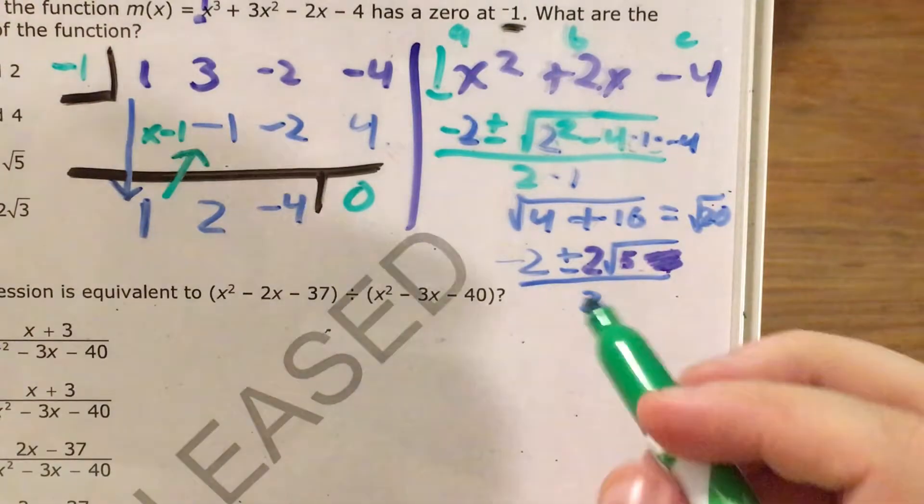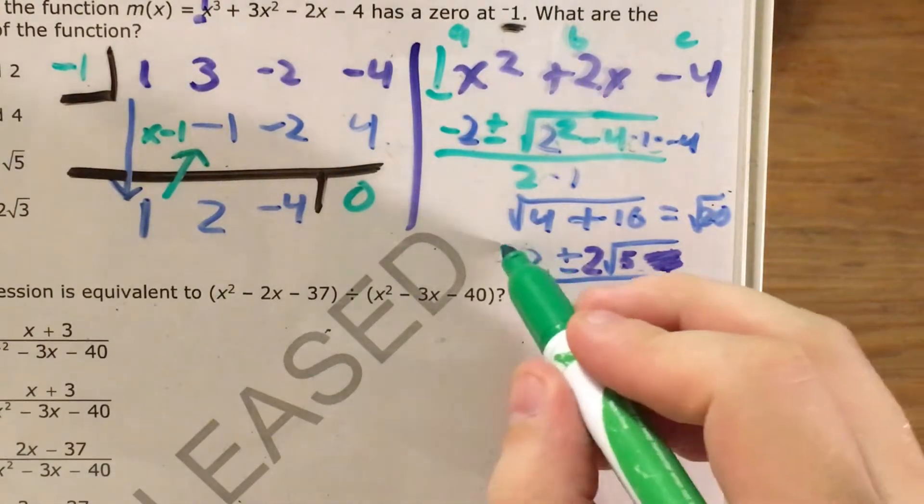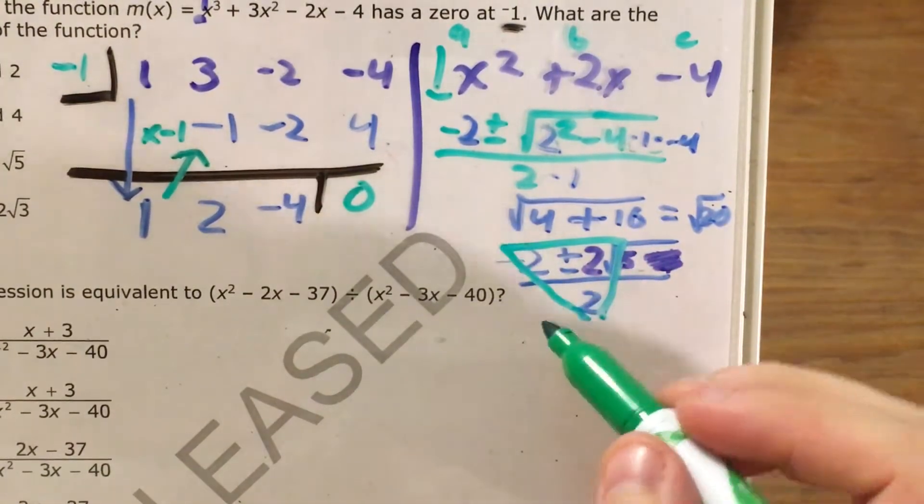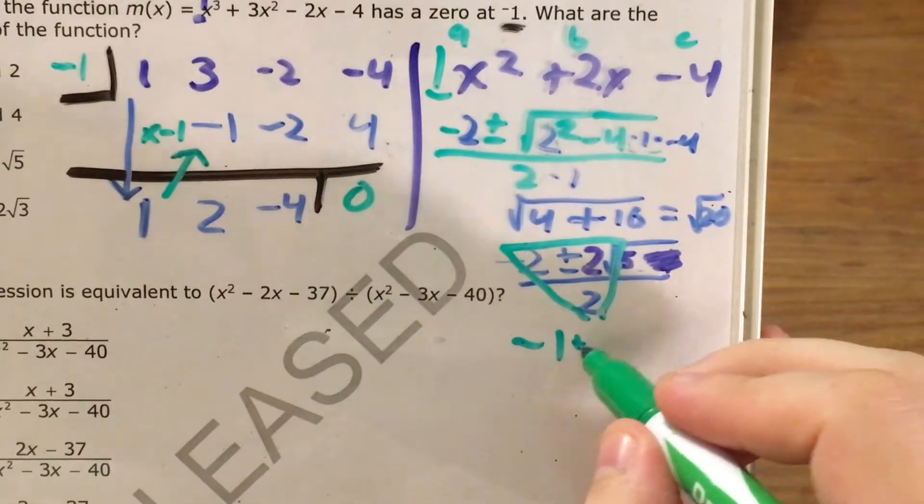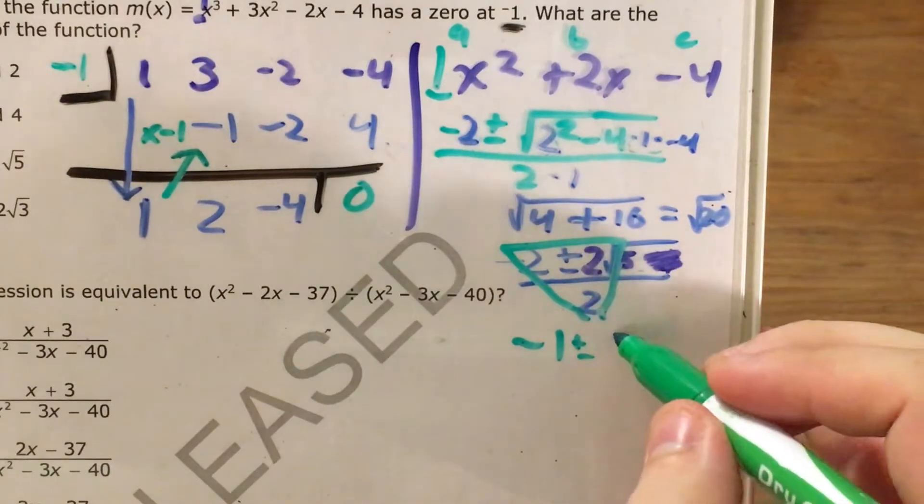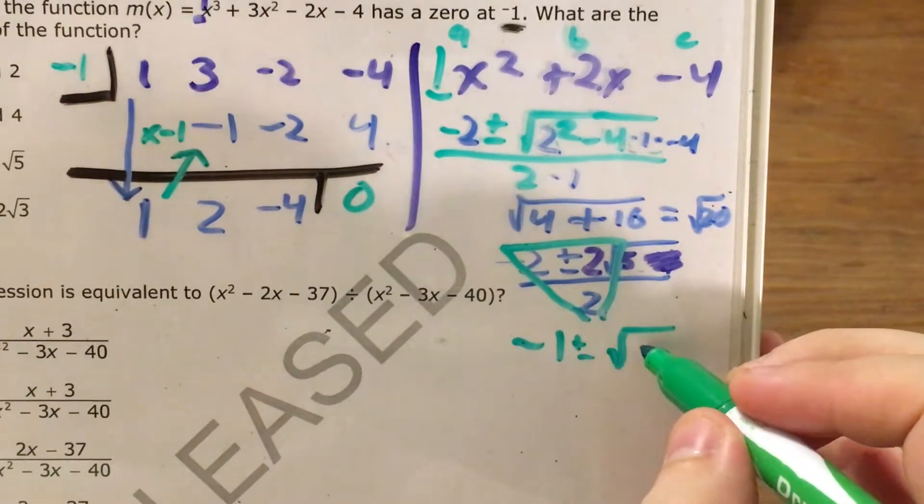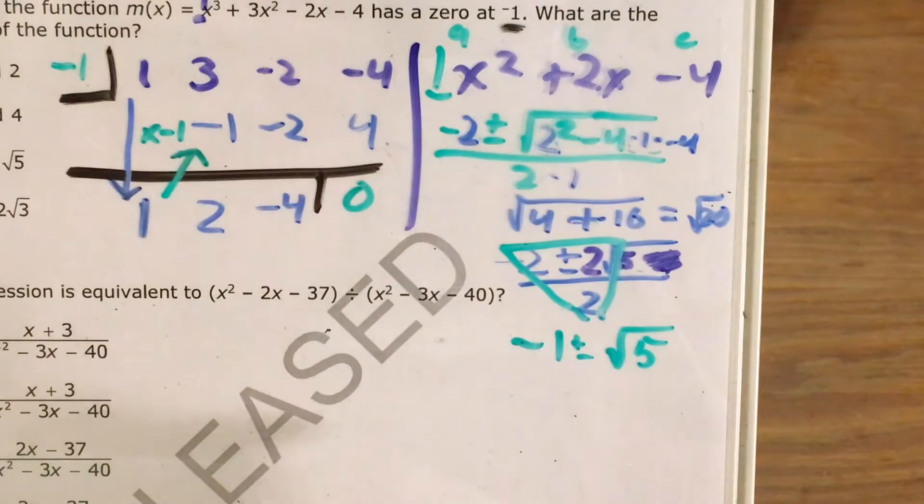And at this point, I'm going to pull out the trick that I learned, which is like triangle division. Essentially, I figure out negative two divided by two, which is negative one. This is going to be plus or minus, and then I figure out two divided by two, which is one. So one times the square root of five is just the square root of five.